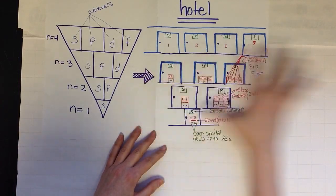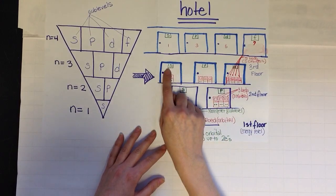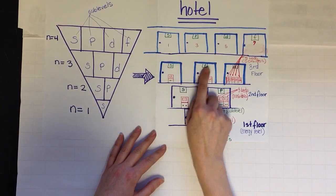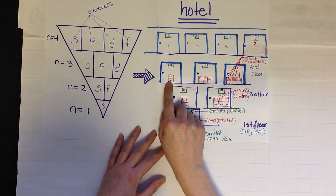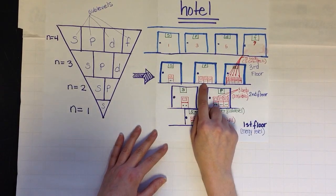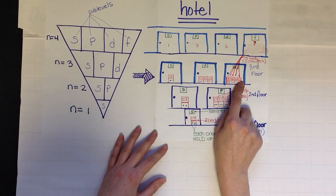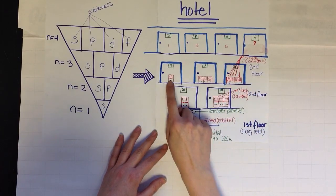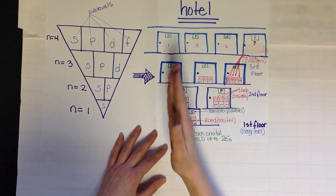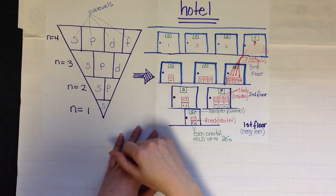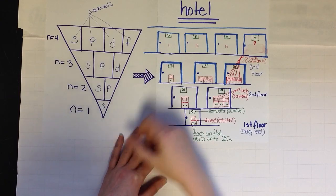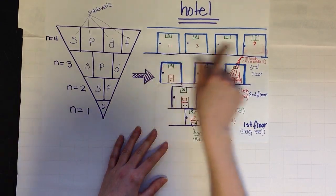I go to the third floor. There's even more room on the third floor. There's room for room S, room P, and room D. Remember, room S always has one orbital. P always has three, and now we see D always has five. Look how many more electrons can fit in. Remember, each bed or orbital can hold up to two electrons.